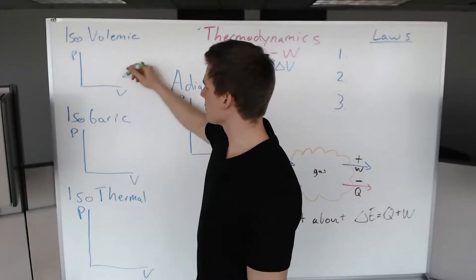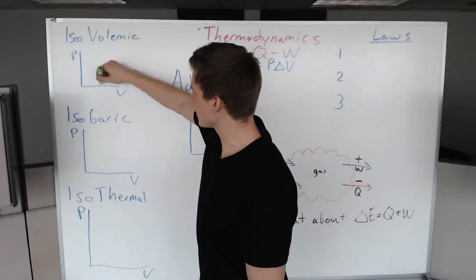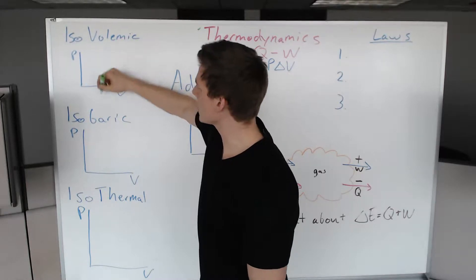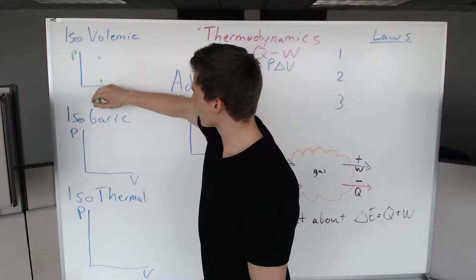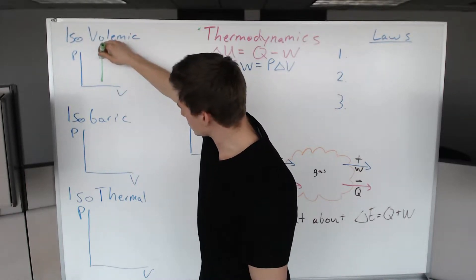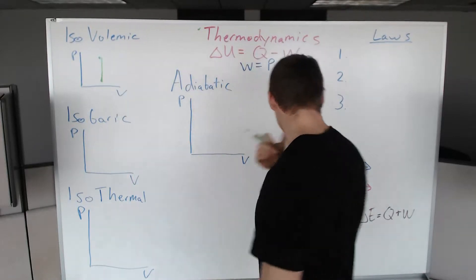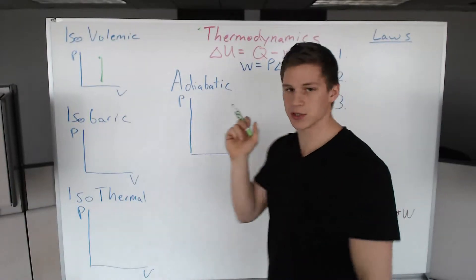For isovolumetric, the volume is the same the entire time, so that would be our point A. Pressure would change to point B, so it would look like so.